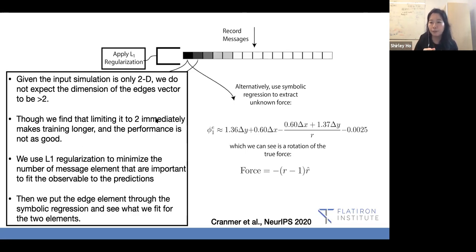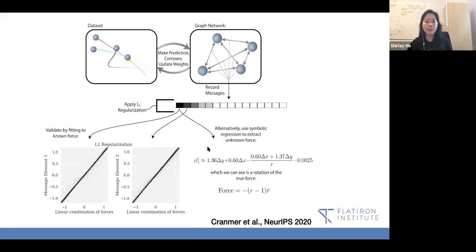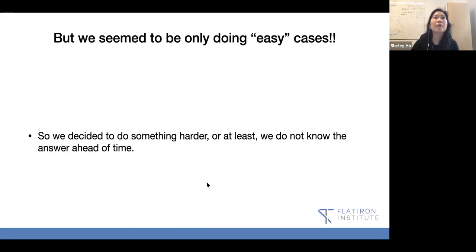We take the elements left after L1 regularization through symbolic regression and see what we fit for the two elements. We find out the elements themselves are rotation of the true force, so when you combine those two elements together, you get the force law. We found force laws recovered in the same manner for springs in 2D and one over r squared in 3D. It's interesting that you can extract analytical expressions from these message elements that actually correspond to real force laws we've known for a long time.